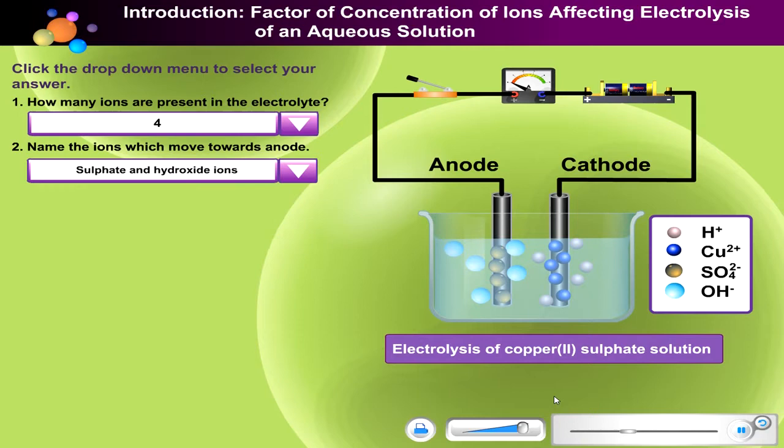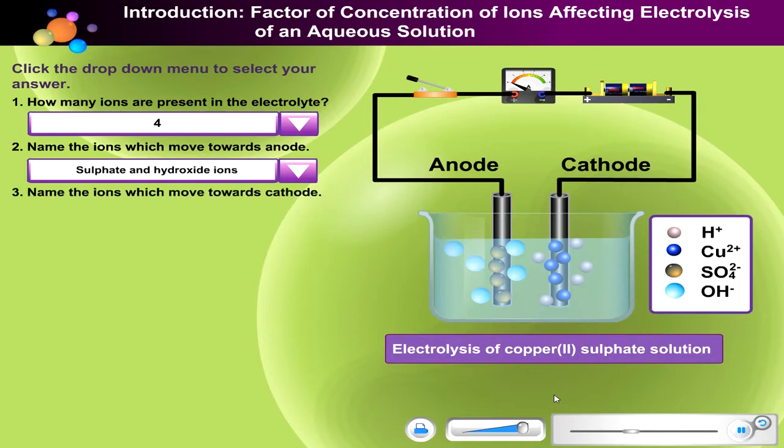Question number 3: Name the ions which move towards the cathode.